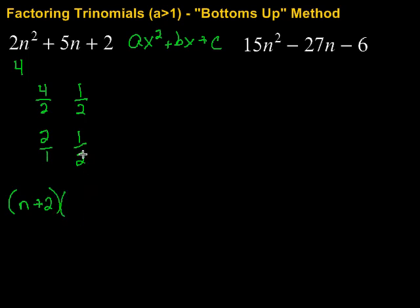Then the second one we have 2N plus 1, reading from the bottom up. Now, we can double check by just foiling it back out, make sure that we get back to what we started with.